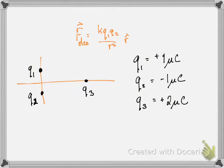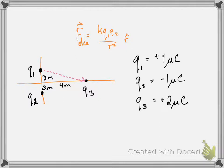Now let's do a Coulomb's Law problem. We have three charges fixed on a coordinate axis: Q1 and Q2 are on the y-axis, equally distributed around the x-axis, and Q3 is along the x-axis. Q1 = +1 μC, Q2 = −1 μC, Q3 = +2 μC. Q1 and Q2 are separated by 6 meters, and Q3 is 4 meters along the x-axis. We want the net force on Q3 due to Q1 and Q2. We draw the force of Q1 on Q3 — both positive, so repulsive.